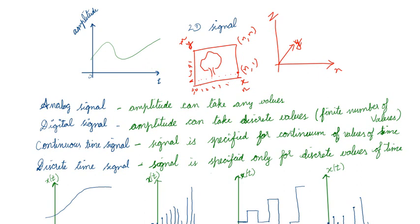The x-axis need not always be time — it can represent, for example, charge on a plate or charge on a television screen. In signals and systems, we concentrate only on the x-axis as time and y-axis as amplitude. You should know that x-axis can also represent pixel numbers, as in image processing. Signals can be two-dimensional, three-dimensional, or even four-dimensional, though 4D is beyond scope.